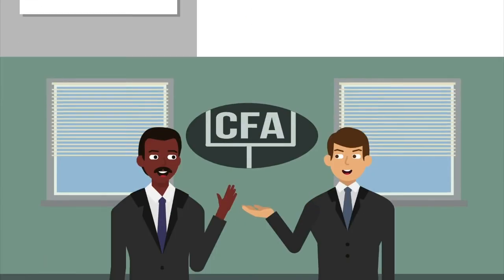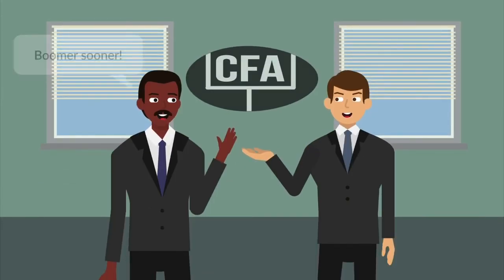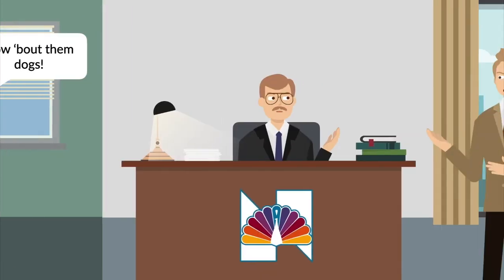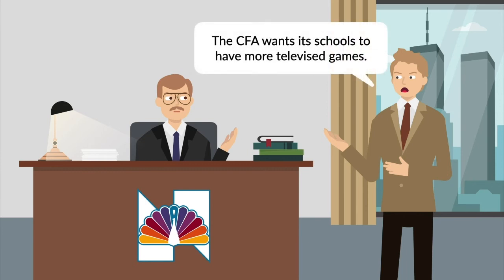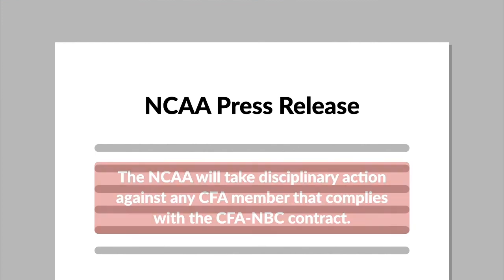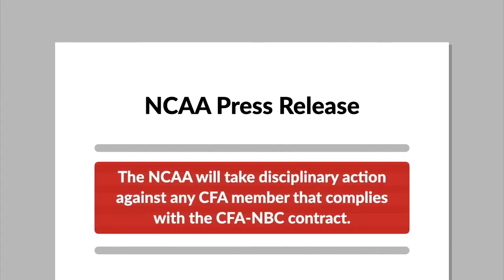In addition to being NCAA members, the universities of Oklahoma and Georgia were members of the College Football Association, or CFA. The CFA claimed that it should have a greater voice in the college football television policy and negotiated a contract with NBC that would allow member schools to televise more games. In response, the NCAA announced that it would take disciplinary action against any CFA member that complied with the CFA-NBC contract.